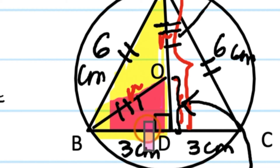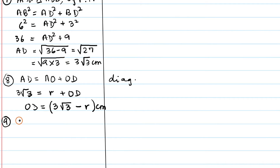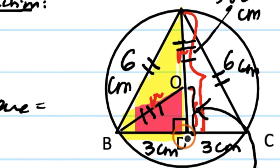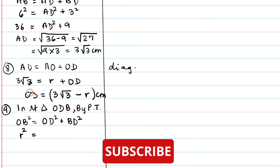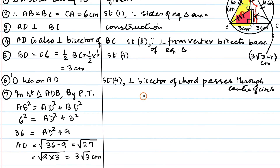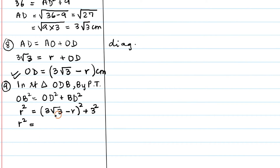Statement 9: in right triangle ODB, by Pythagoras theorem: OB² = OD² + BD². Substituting, r² = (3√3 − r)² + 3². Expanding using (a−b)² = a² − 2ab + b²: r² = 27 − 6√3·r + r² + 9.